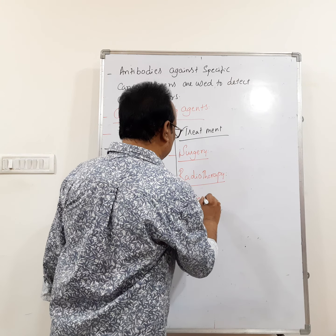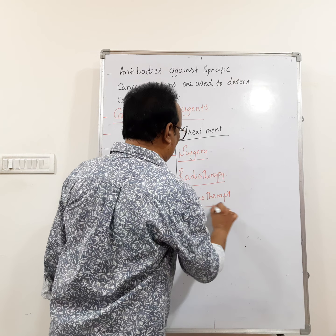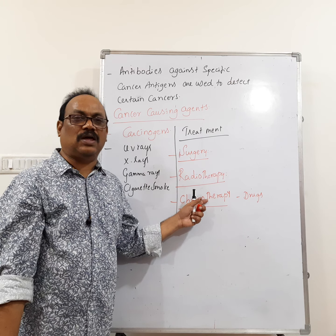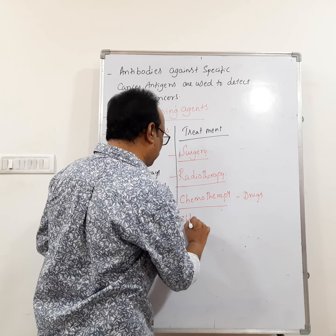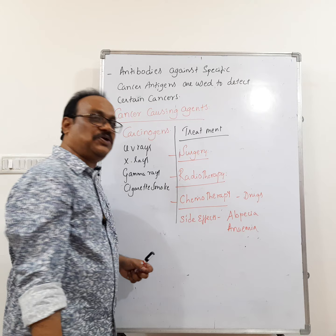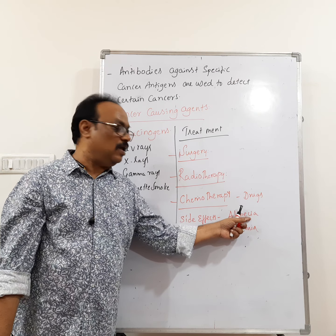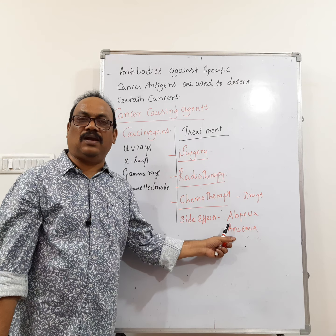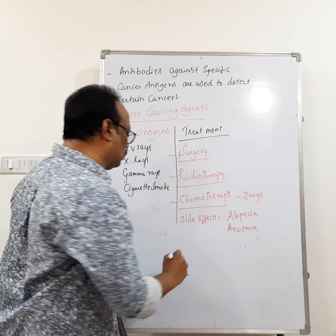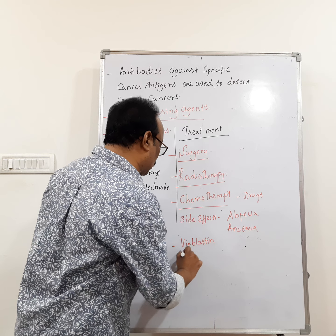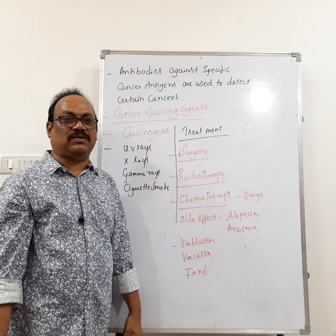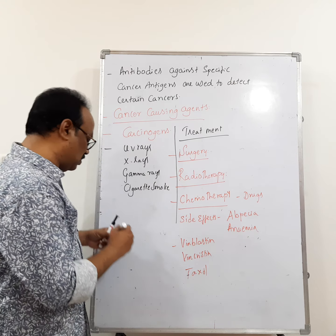The third treatment is chemotherapy, which uses cytotoxic drugs. Chemotherapy has side effects: alopecia (loss of hair on the head) and anemia (decrease in bone marrow content). The drugs used in chemotherapy include vinblastin, vincristin, and taxol. Taxol inhibits cell division.